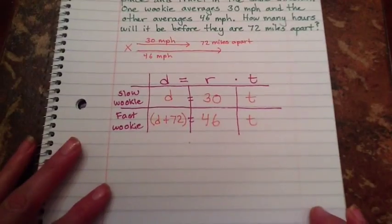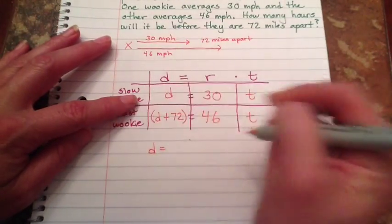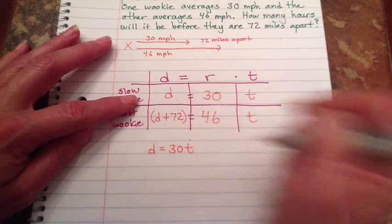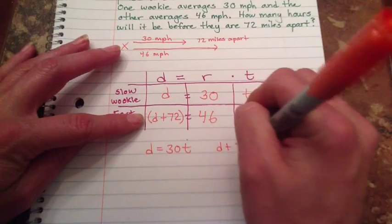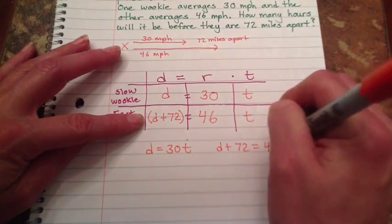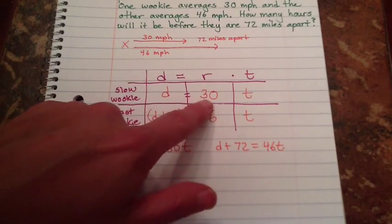Here's your two equations. So now you just set them up and you solve. First equation is distance equals 30t. Second equation, distance plus 72 equals 46t. All I did was pull them from the chart. Distance equals 30t.